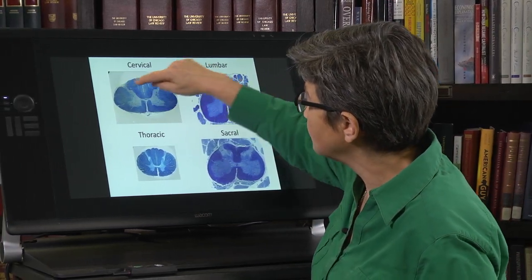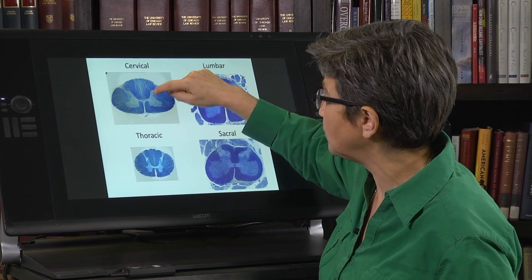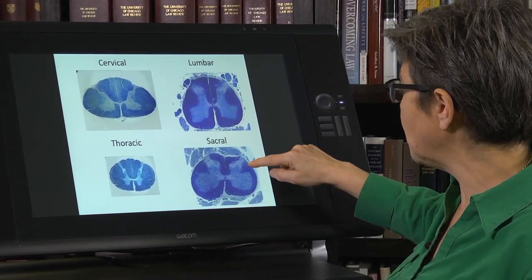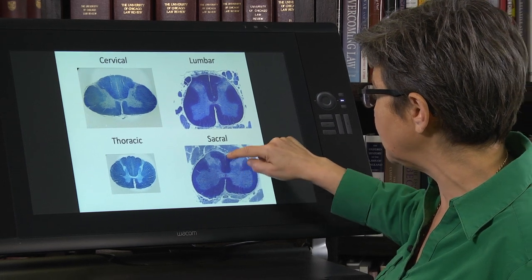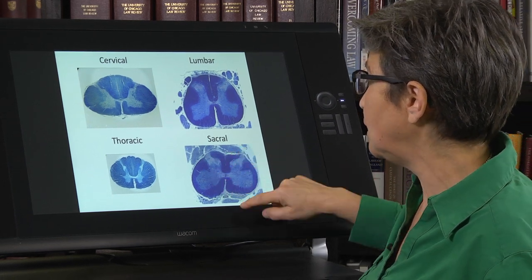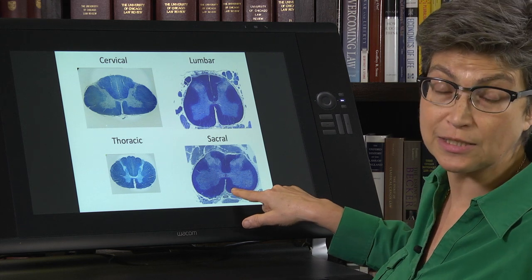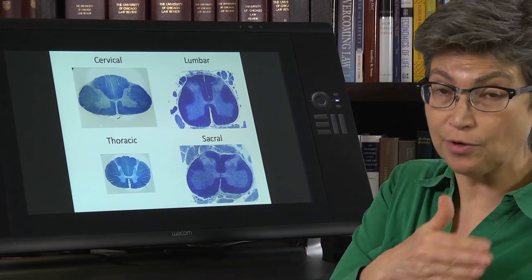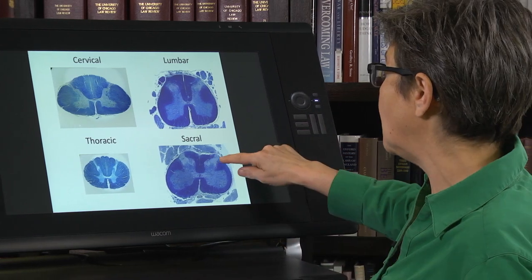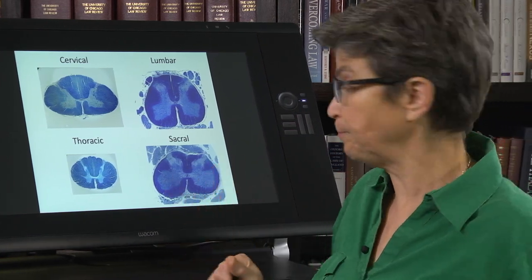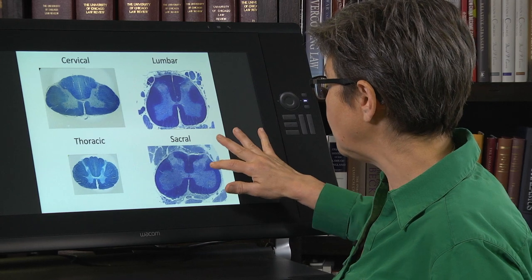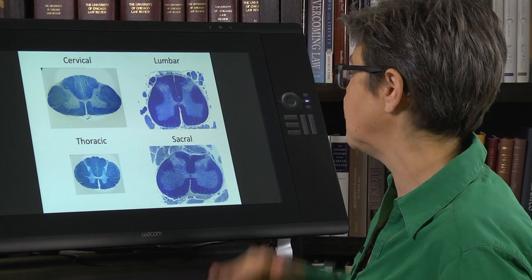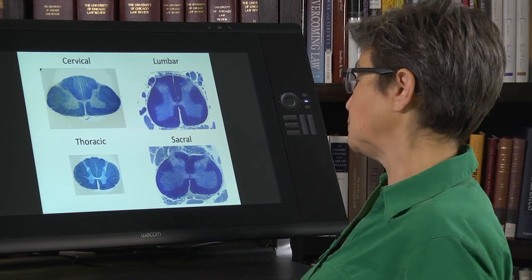Look at all the white matter surrounding the gray matter in the cervical cord. And in comparison, look at the relatively little bit of white matter in sacral cord. And this looks to me as though it's around S1. By the time you get even back to S3 or S4, it's going to be much less even than that. So there's really a reduction in the amount of white matter as you go progressively more caudal through the spinal cord.